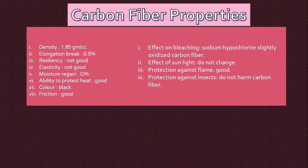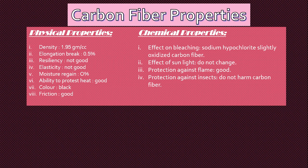Next are carbon fiber properties — two types: physical properties and chemical properties. Physical properties: density 1.95 g/cc; elongation at break 0.5%; resiliency not good; elasticity not good; moisture regain 0%; ability to protect heat: good; color: black; friction: good. Chemical properties: effect of bleaching — sodium hypochlorite lightly oxidizes carbon fiber; effect of sunlight — does not change; protection against flame: good; protection against insects: carbon fiber does not harm.